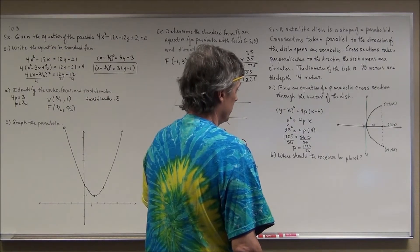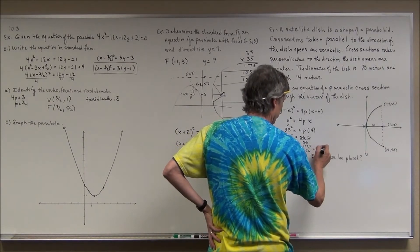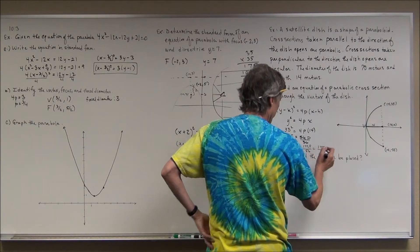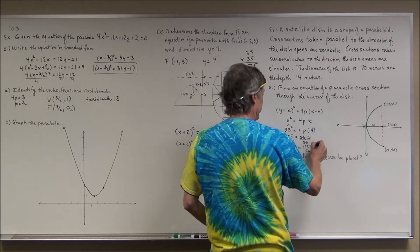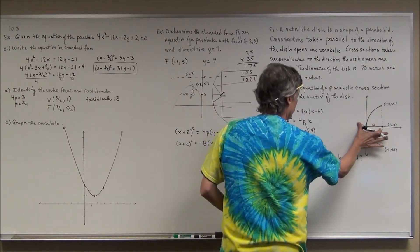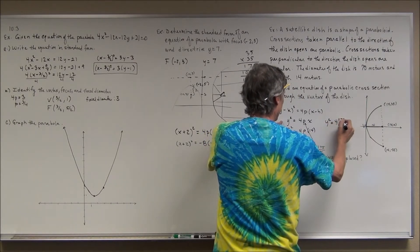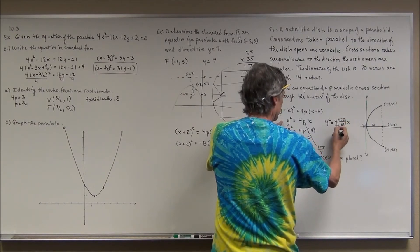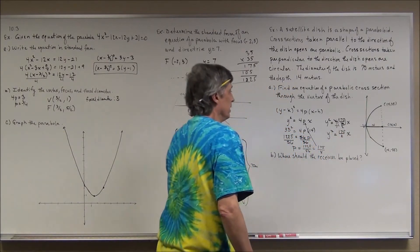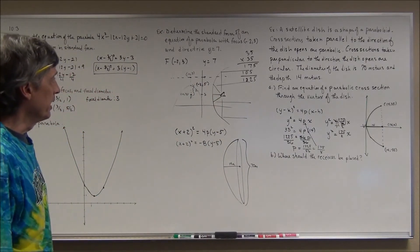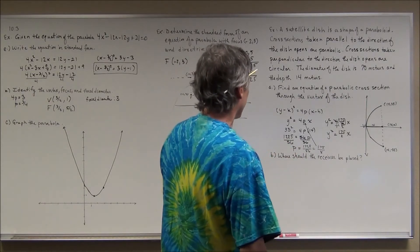Simplifying 1225 over 56: dividing both by 7 gives 175 over 8. So p equals 175 over 8. The equation becomes y² equals 4 times (175 over 8) times x, which simplifies to y² equals (175 over 2) x, or y² equals 175 halves times x.